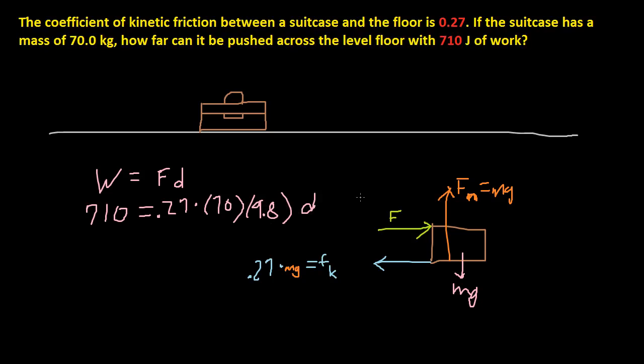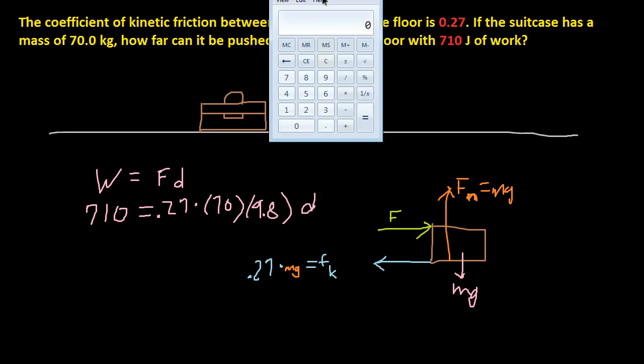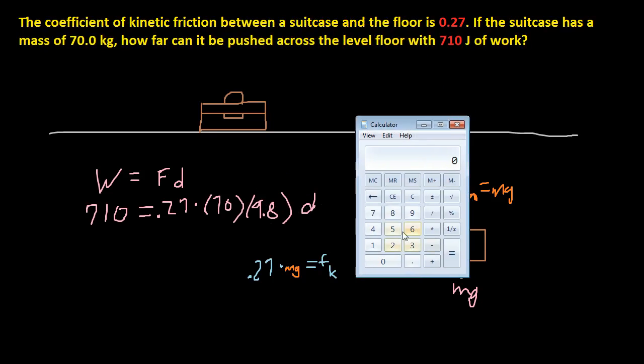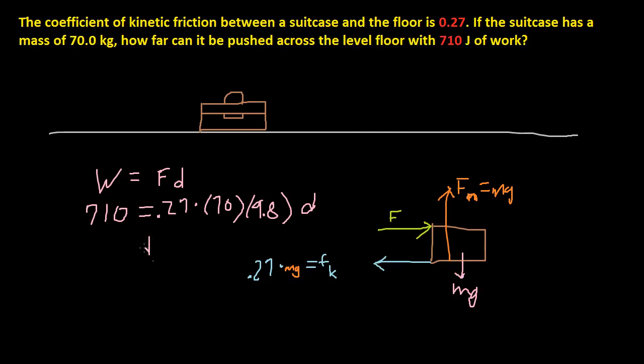Alright, so now we get to solve for d. So it's just 710 divided by 0.27 divided by 70 divided by 9.8. And that gives me 0.38. So our distance is equal to 0.38 meters.